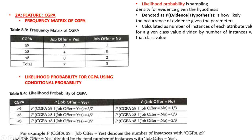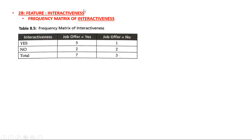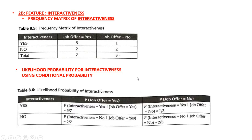Likelihood probability is nothing but probability of evidence E given the hypothesis — it tells how likely the occurrence of evidence has happened given the parameters. Once you find the likelihood probability, repeat this entire step for the next attribute: interactiveness. Find the frequency matrix; interactiveness has just two values, yes and no. Count how many times you got job offer yes and job offer no, note it down, and take the total. Then find the likelihood probability.